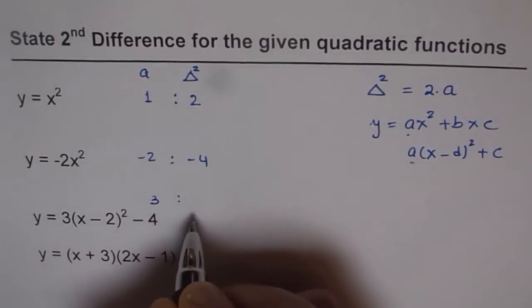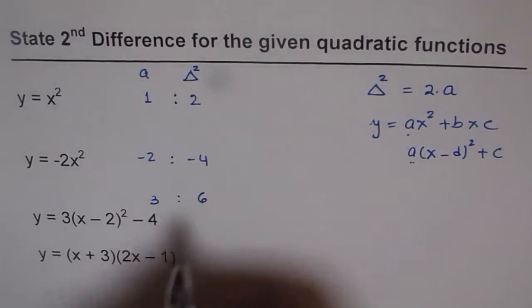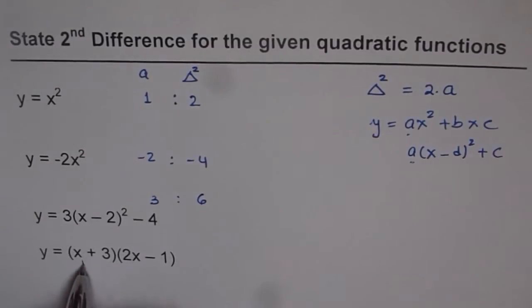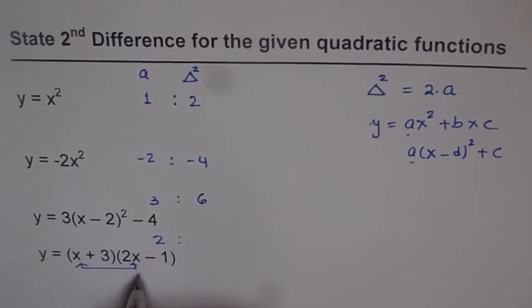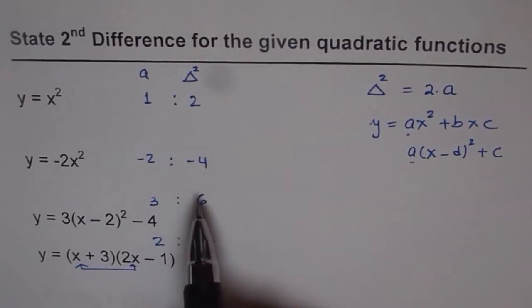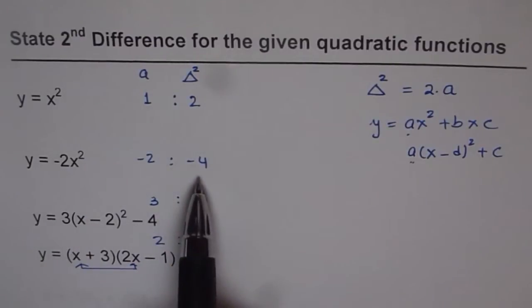In this particular case a value is 3, so second difference will be 2 times 3 which is 6. Here we need to find a. You will get a when you multiply these two x terms. You get 2x square and therefore the a value is 2 and the leading coefficient is going to be 2 times 2 as 4. You will see that the leading coefficient sign is same as the sign of the second difference.